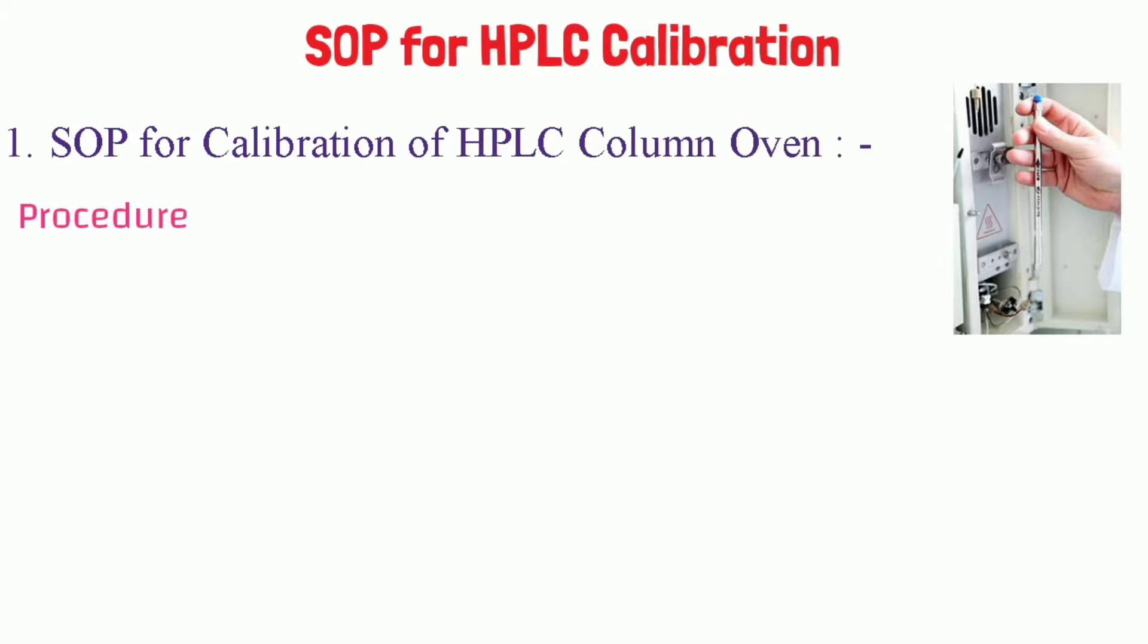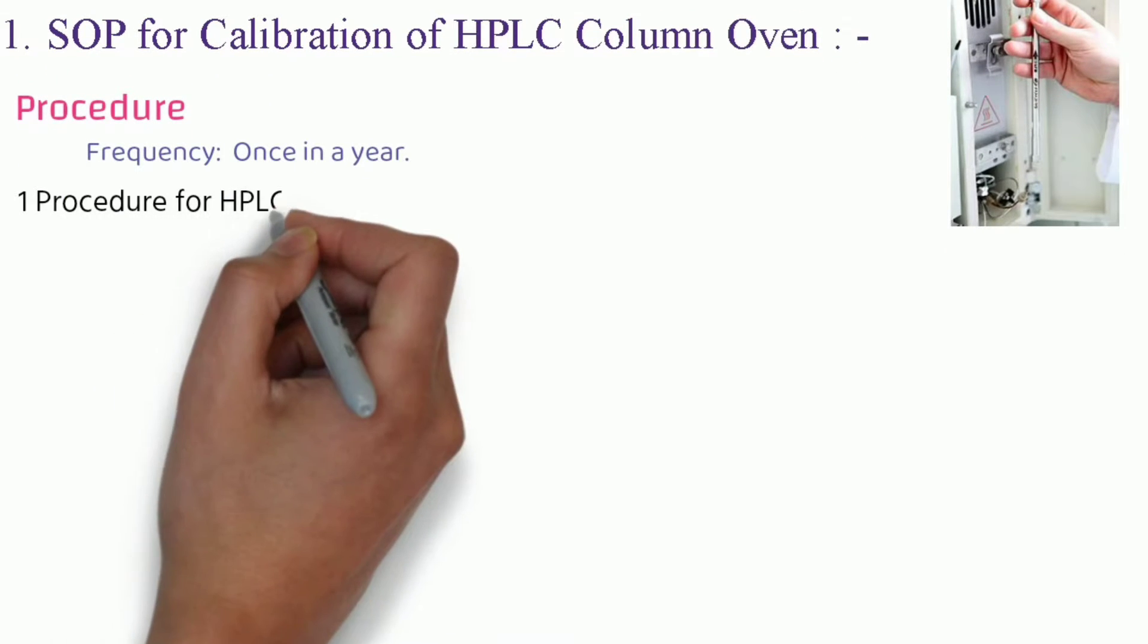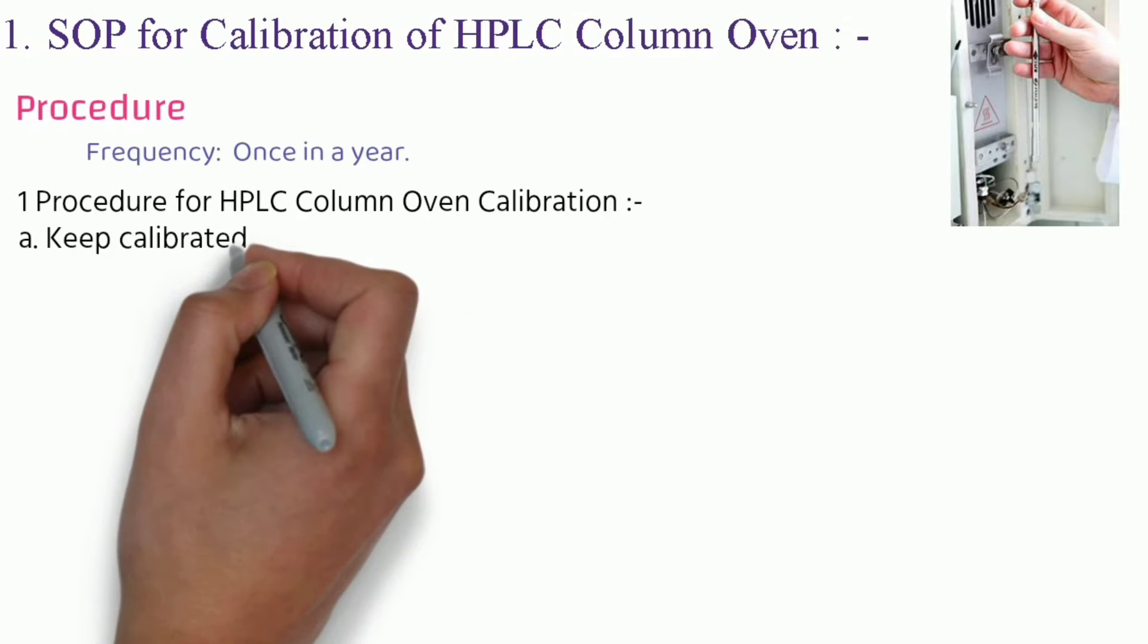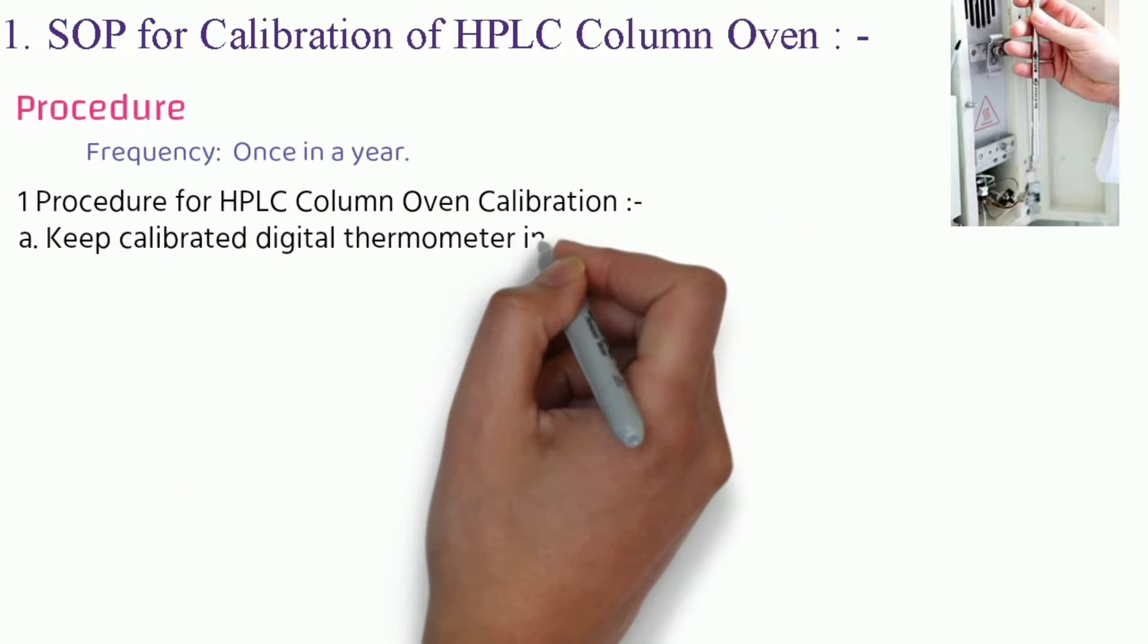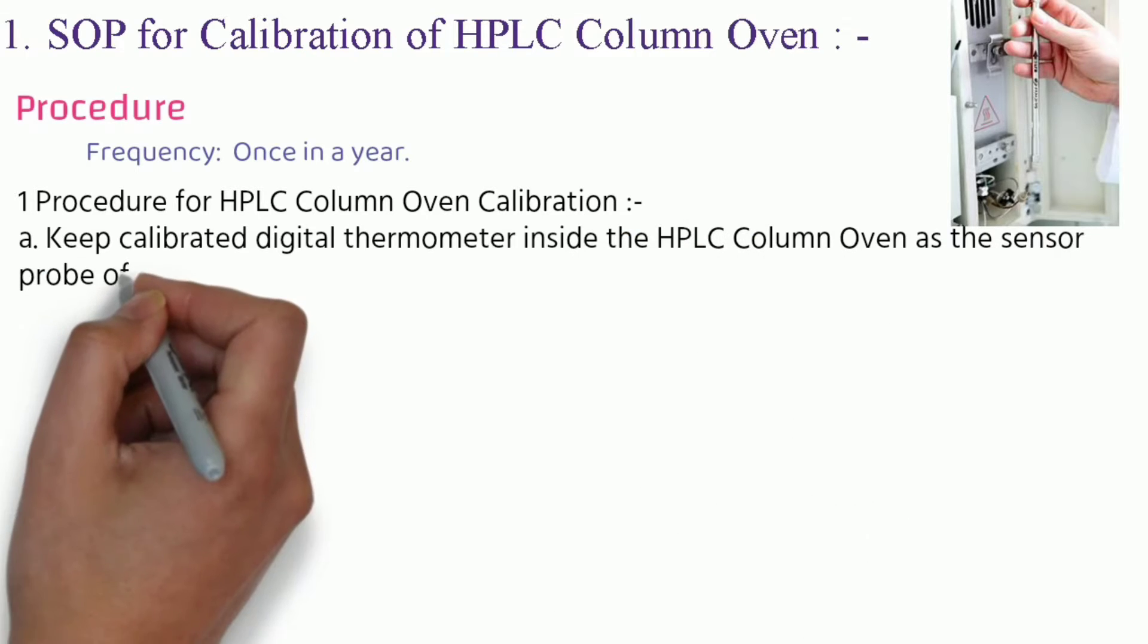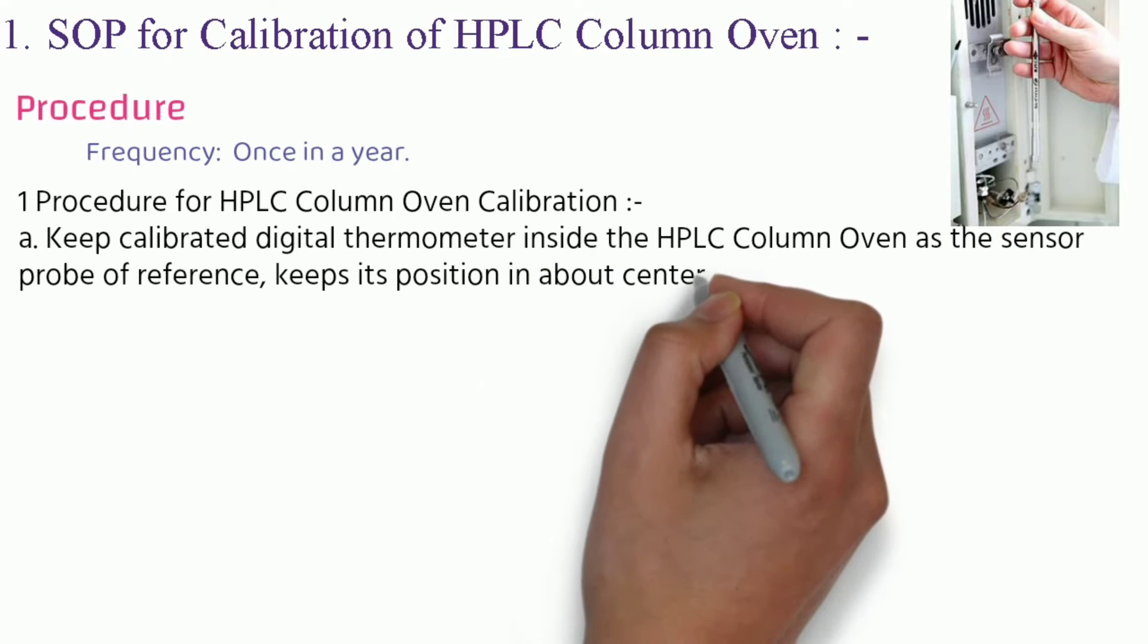Procedure: Its frequency is once in a year. Procedure for HPLC column oven calibration: Keep calibrated digital thermometer inside the HPLC column oven as the sensor probe of reference. Keep its position in about center of the oven chamber.